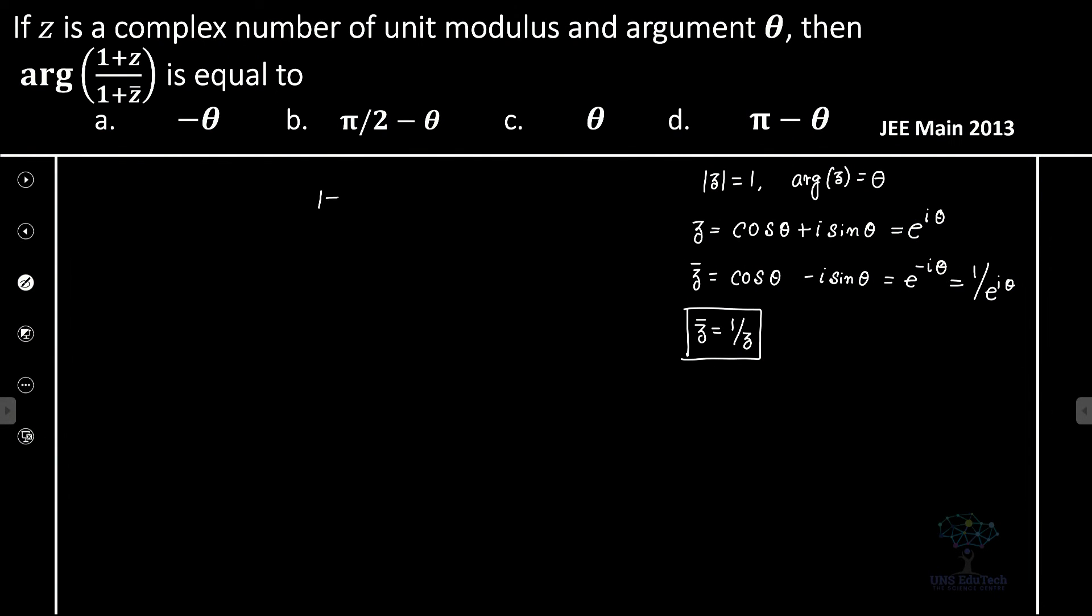So let us consider the given complex number, that is 1 plus z divided by 1 plus z bar. Therefore z bar can be easily replaced by 1 by z, and hence you can see that this is actually z into 1 plus z divided by 1 plus z, and that's equal to z.